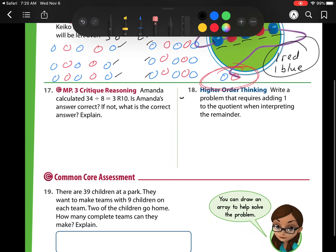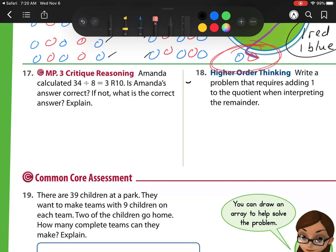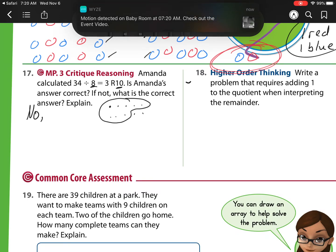Down to number 17. Amanda calculated 30, 40 divided by 8 is 3, remainder 10. Is Amanda's answer correct? If not, what is the correct answer? Well, I know she's not correct. The answer is no because she has 10 here for her leftovers. And if I have 10, 1, 2, 3, 4, 5, 6, 7, 8, 9, 10, I can make a group of 8 right here. So I know that her remainder is not actually 10, it's 2. And she has one more group, so she can make 4 groups.